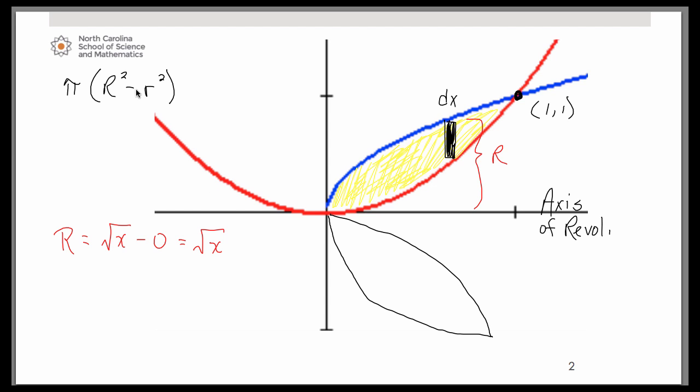Now for little r. Little r is essentially the radius of the hole itself. So little r is this part right in here.